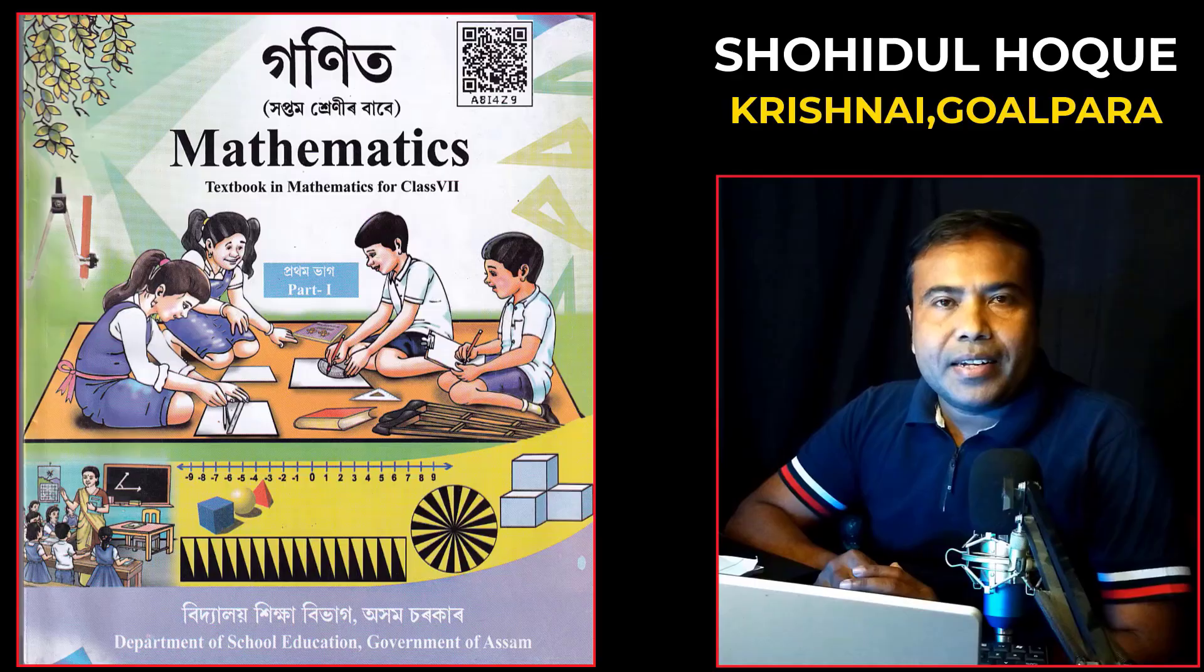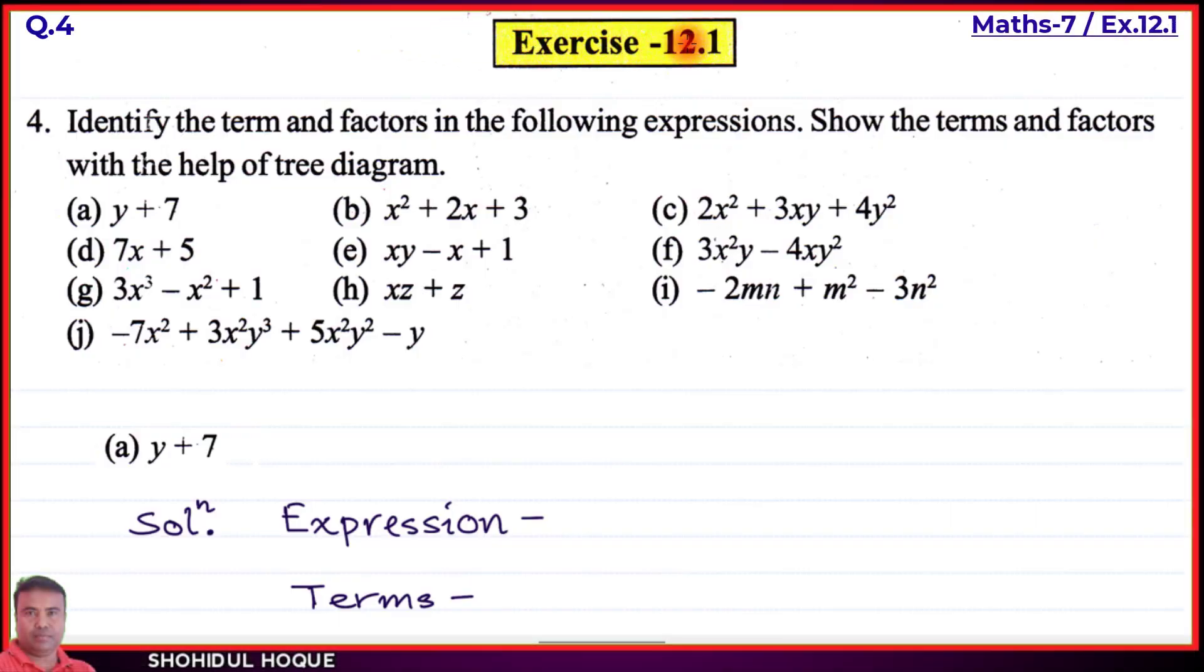Louis ISO Mathematics Class 7 new book part 2, Exercise 12.1, English medium, Question number 4. We need to identify the terms and factors in the following expressions, showing the terms and factors with the help of a tree diagram.